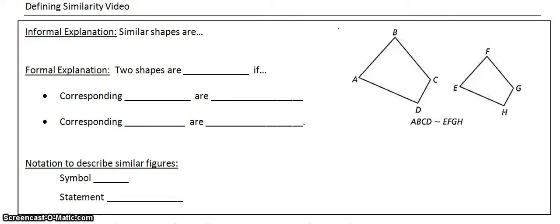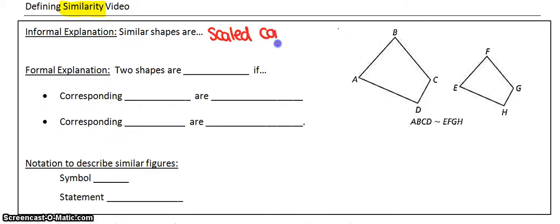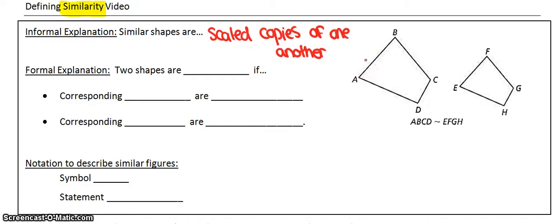Hi, everyone. In this video, we're going to continue our discussion about scaled figures and define a word called similarity or similar figures. This video is really nothing new — we're just going to put some new vocab and notation on what we've already been studying. So when we say shapes are similar, that means the similar shapes are scaled copies of one another — same shape, but different size.